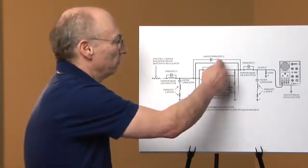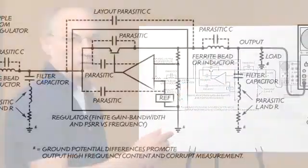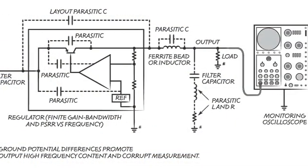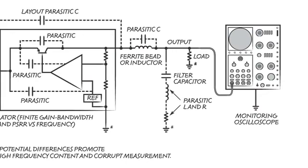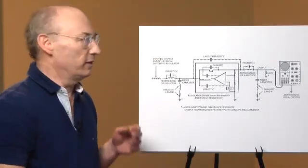The regulator has parasitic internal paths basically from everywhere to everywhere. And the output filter components suffer the same problems that the input filter components have. So the monitoring oscilloscope looking across the load sees stuff that you don't want to be there.